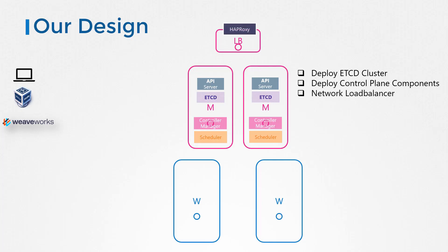Finally, we will configure the load balancer. We will use HAProxy as the load balancer, which will listen on port 6443 and split all traffic to the API servers. We will then point all nodes and other components that need access to the API server — such as the kubectl utility — to the load balancer. That way, if any of the master nodes fail, the cluster will still stay alive.